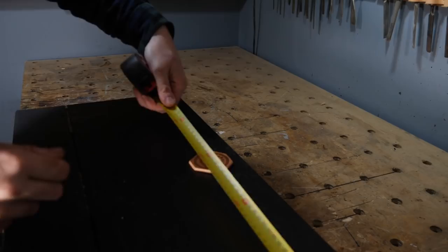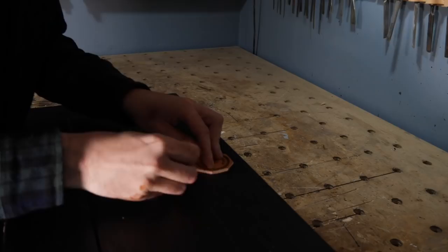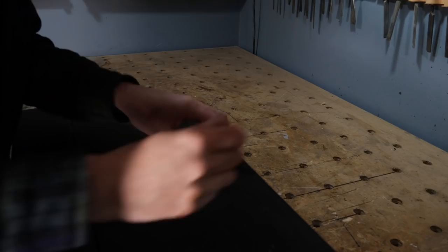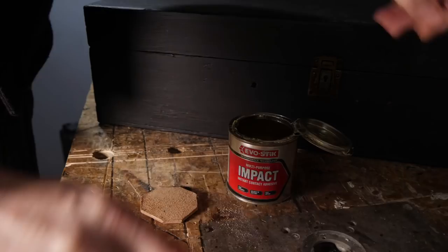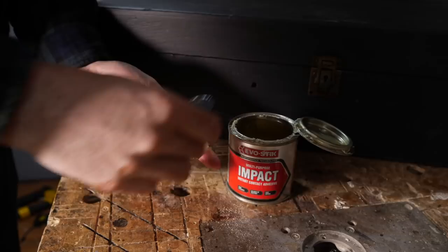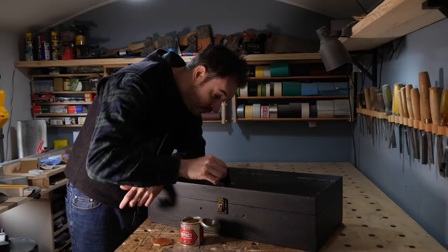I get the logo positioned centrally at the top of the box, and then I draw around it. This is because I want to use some contact adhesive, and you need to put it on both surfaces. So first I get it spread out on the back of that little bit of leather. Then I get some put on the box in those pencil lines I've drawn, and then both pieces need to be left 10 minutes before putting together.